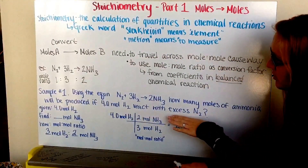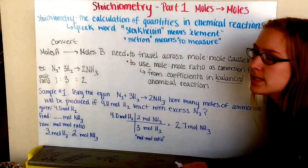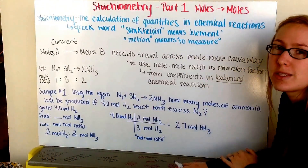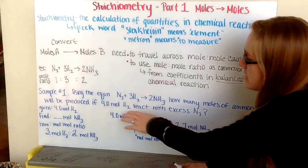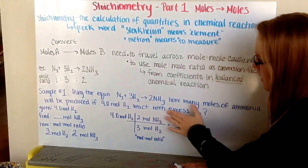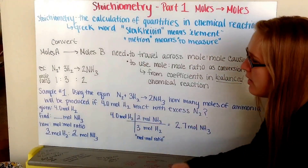The excess nitrogen is important because it tells us we have tons and tons of nitrogen available. The only thing that's going to limit how much ammonia we make is our hydrogen gas, so we don't have to worry about the nitrogen.